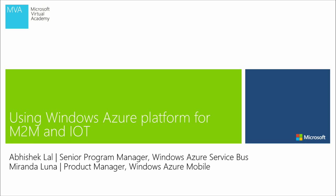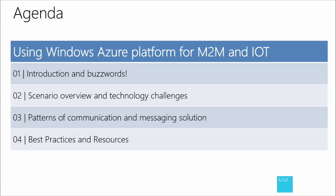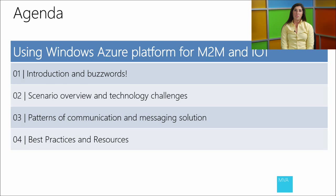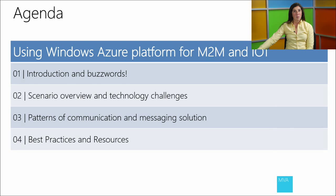We are going to be talking about some pretty popular buzzwords: M2M and IoT. You've probably heard them a couple of times. We'll cover what exactly we mean in this session by M2M and IoT, because they've been used in pretty much every way possible. We'll go into a scenario overview, focus on a connected car scenario, talk about some technology challenges, go over patterns of communication and a messaging solution. We also have a Raspberry Pi here today — stay tuned and let us know if you have questions.